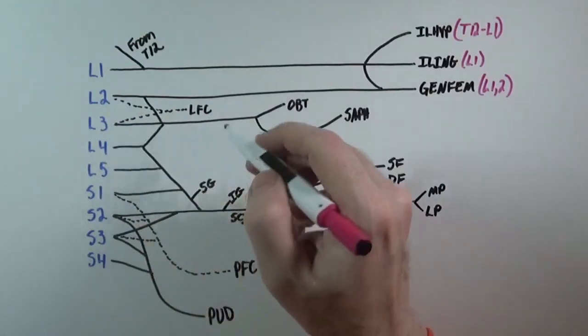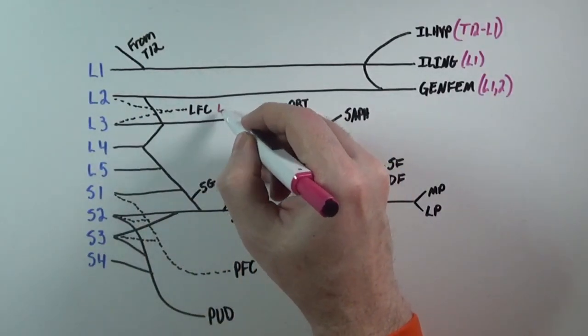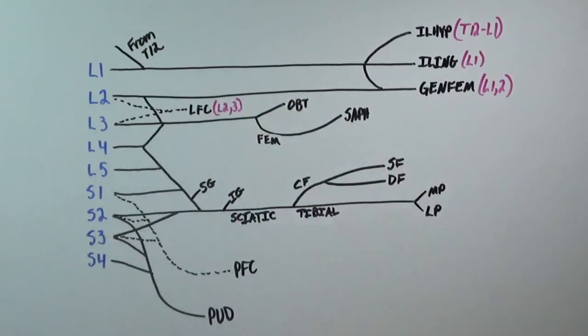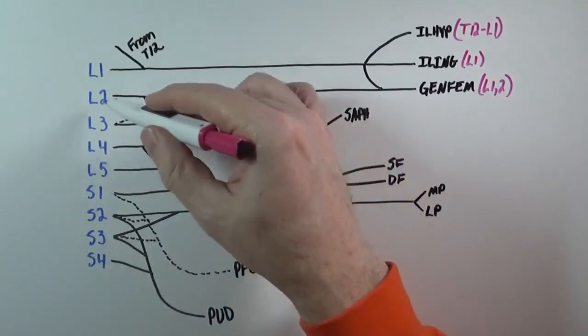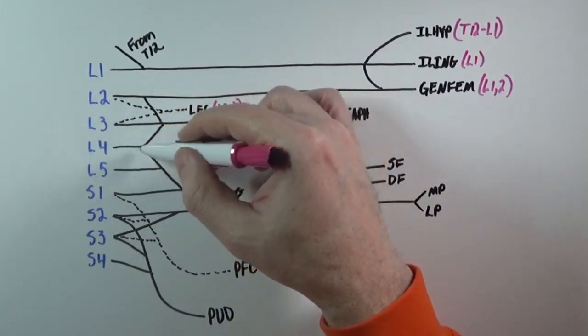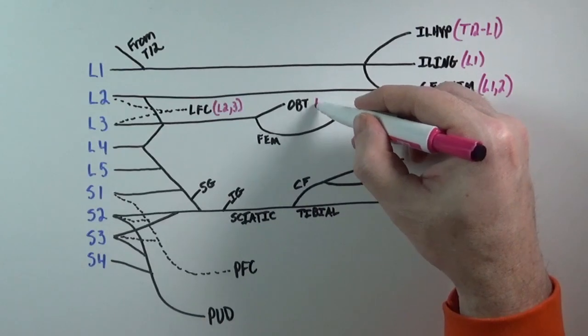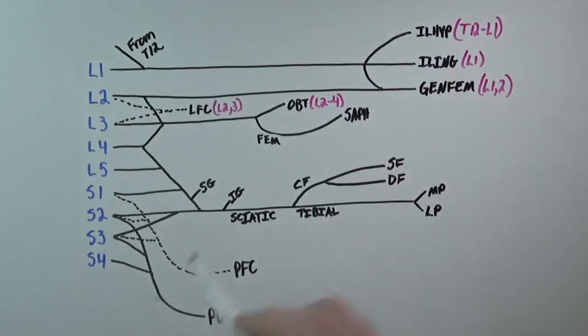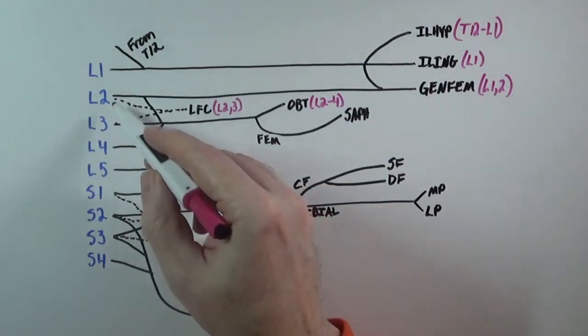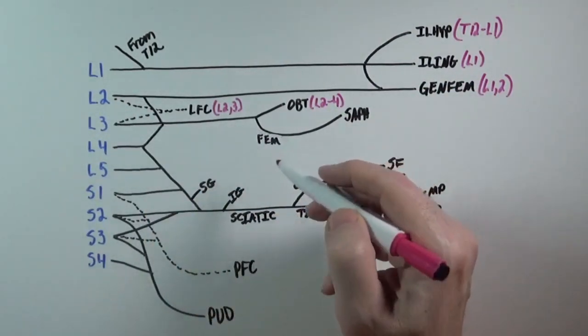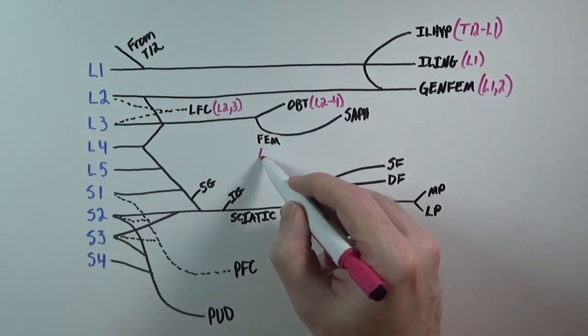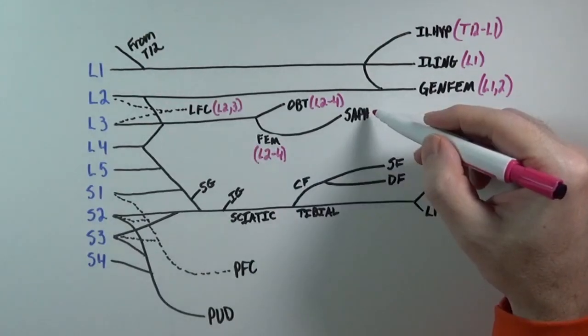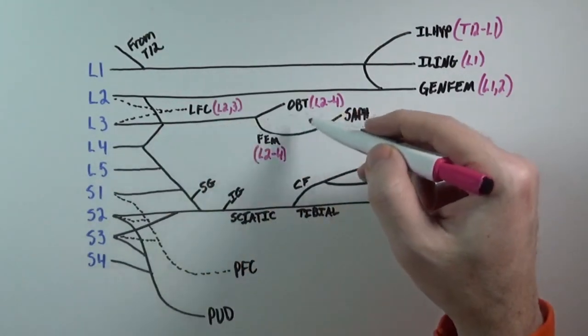Lateral femoral cutaneous comes from L2 and L3 and runs behind the plexus, hence the dotted line. When we look at the obturator nerve, we can trace it from L2, L3, and L4. The femoral nerve also comes from L2, L3, and L4. Now the saphenous nerve comes from L3 and L4 only.